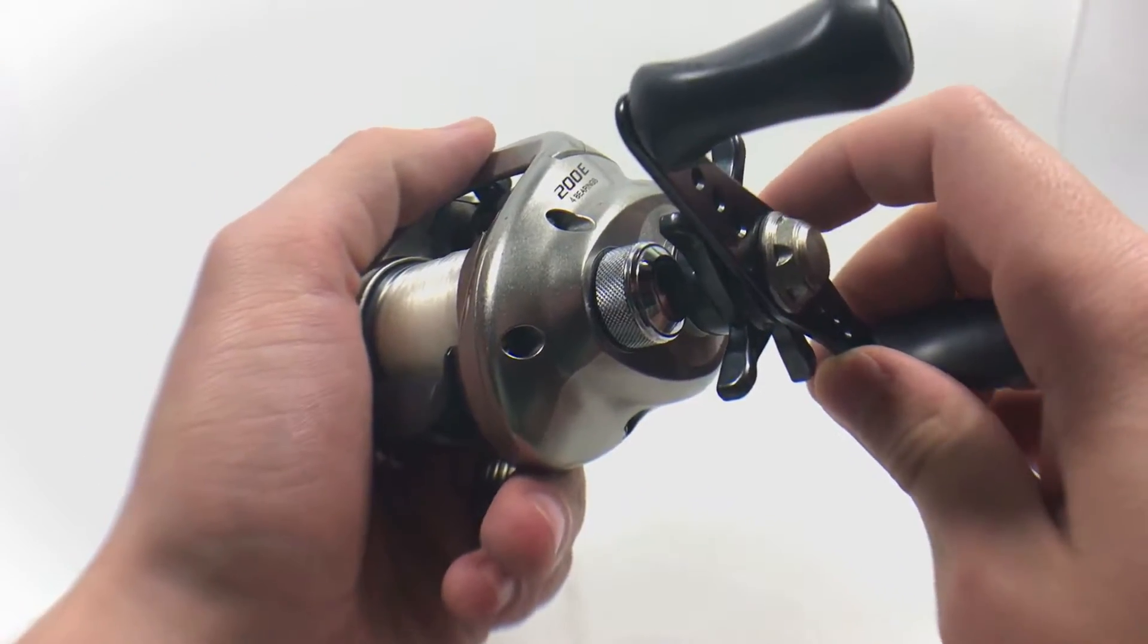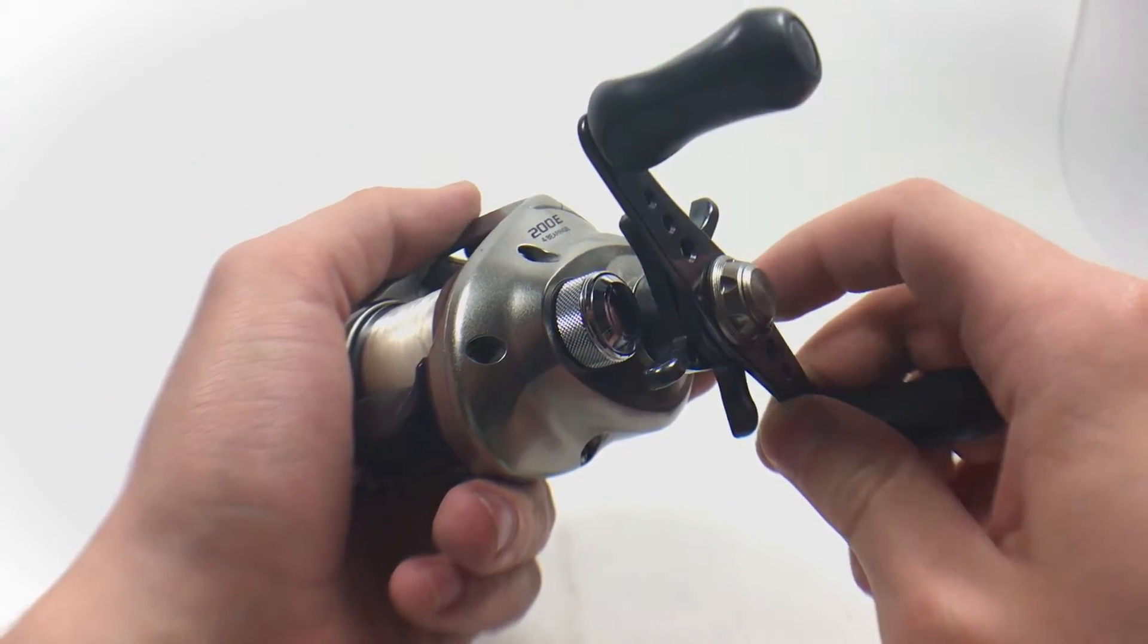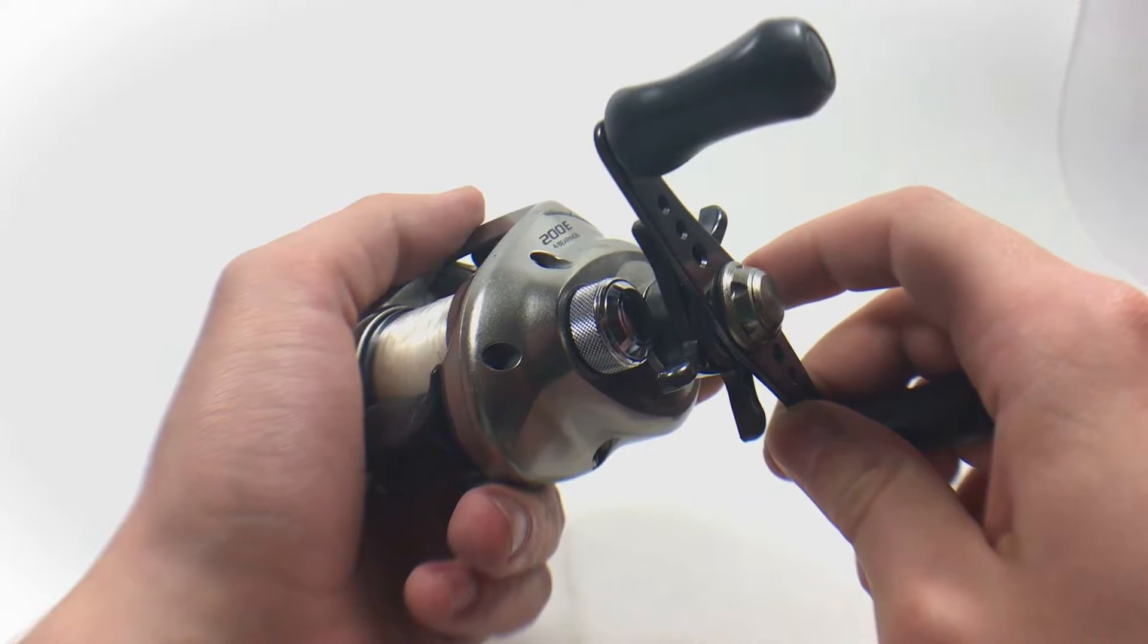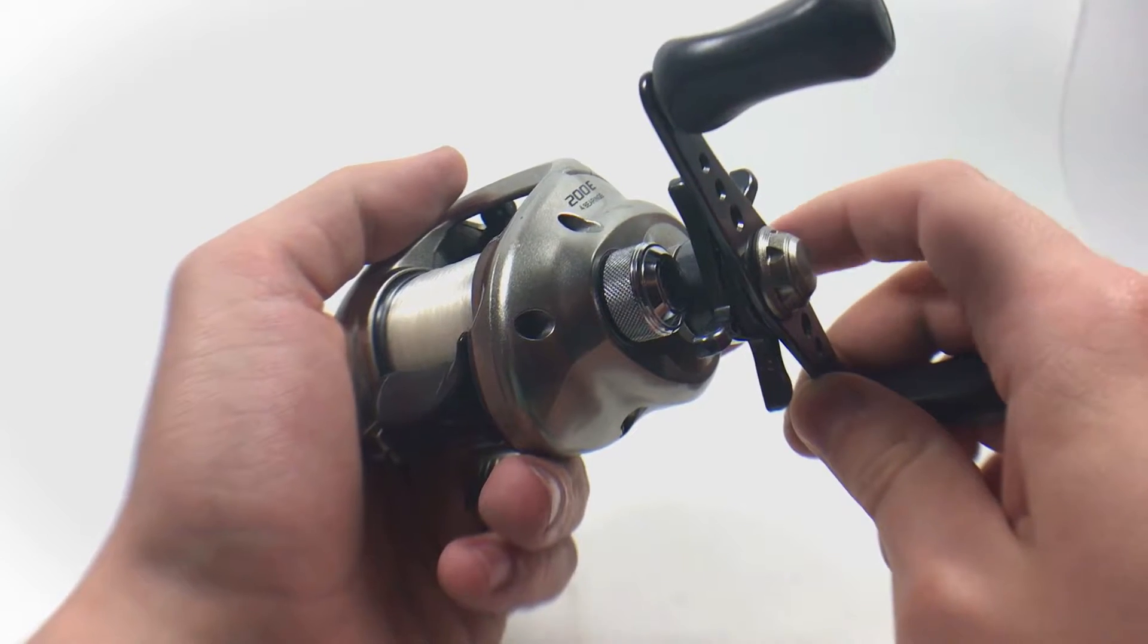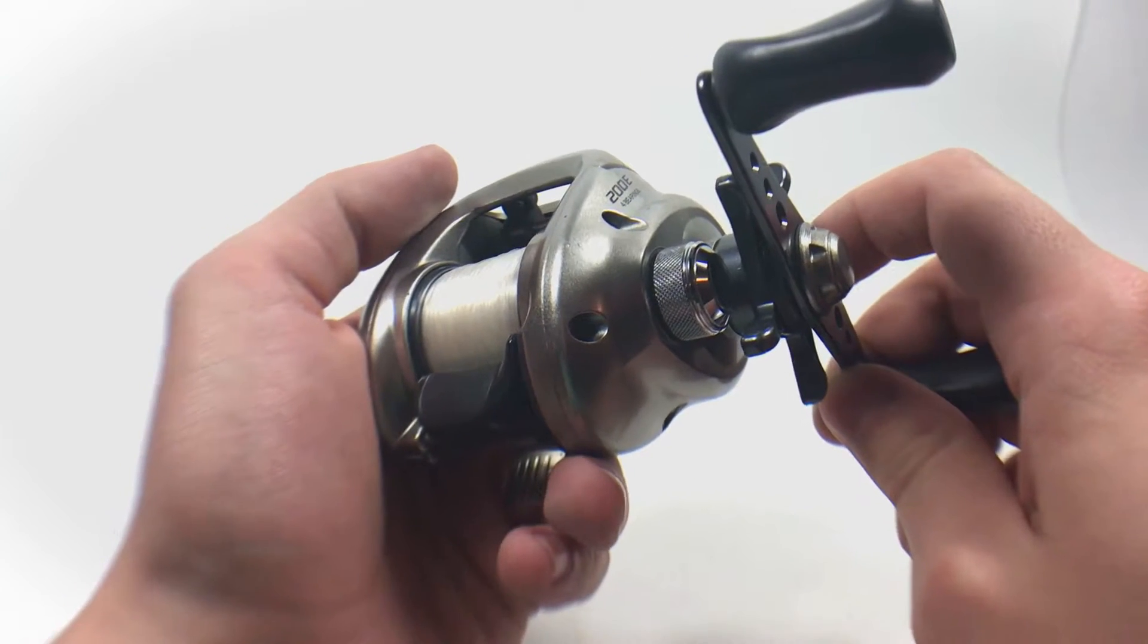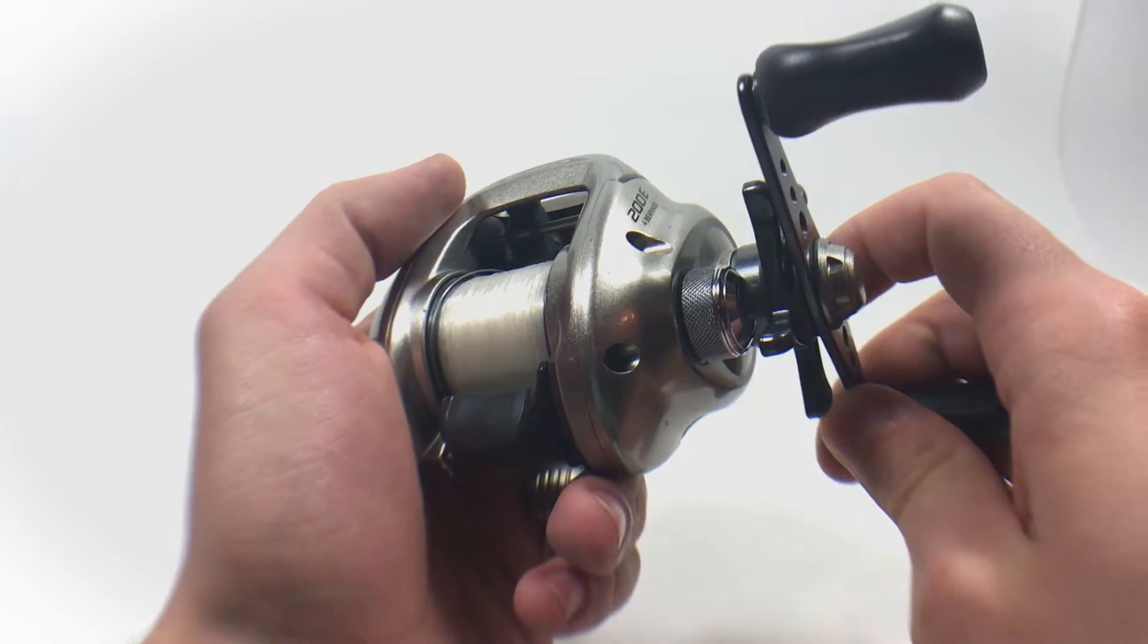You can find plenty of these online. You can find some on eBay that have them. Some of them are probably used, some of them may be new out of box. I'm not sure. You can also find some of them on other websites that have them. If I do find a place, I'll put it in the description for y'all.